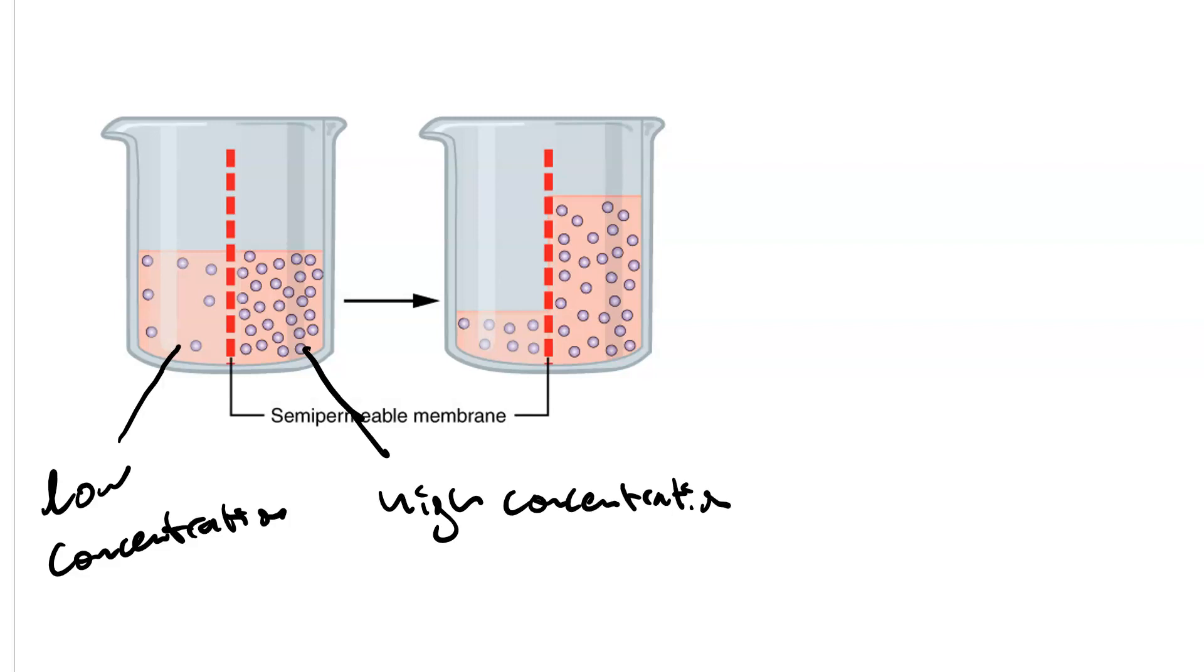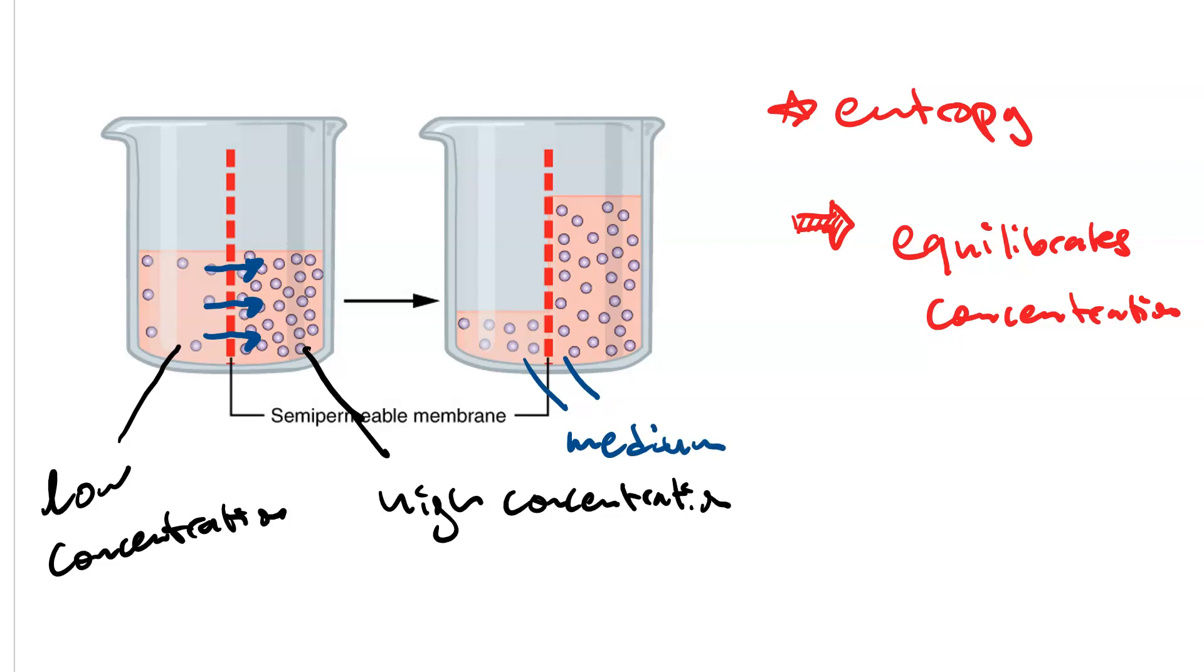The driving force of osmosis is entropy. But the whole idea here is that nature wants the concentrations to be as equal as possible. Now, only water can pass through the membrane. These little solute particles, depicted by the spheres, cannot. So we end up with a net movement of water across the membrane from the less concentrated side to the more concentrated side, until we end up with the situation on the right, where on both sides, the concentration is medium. It's close to equal.